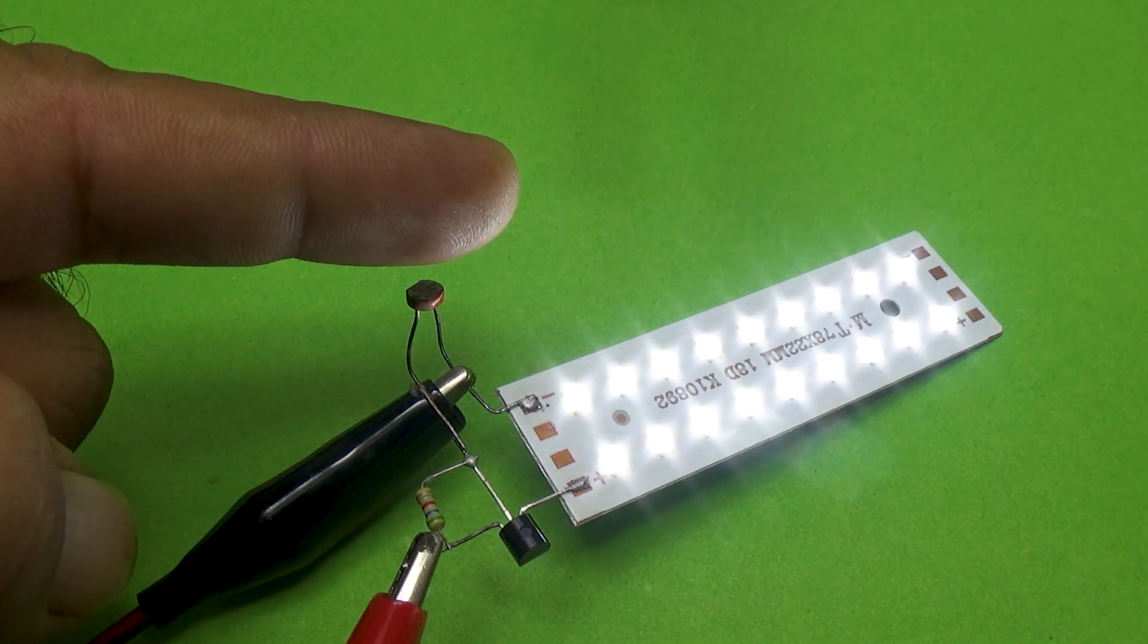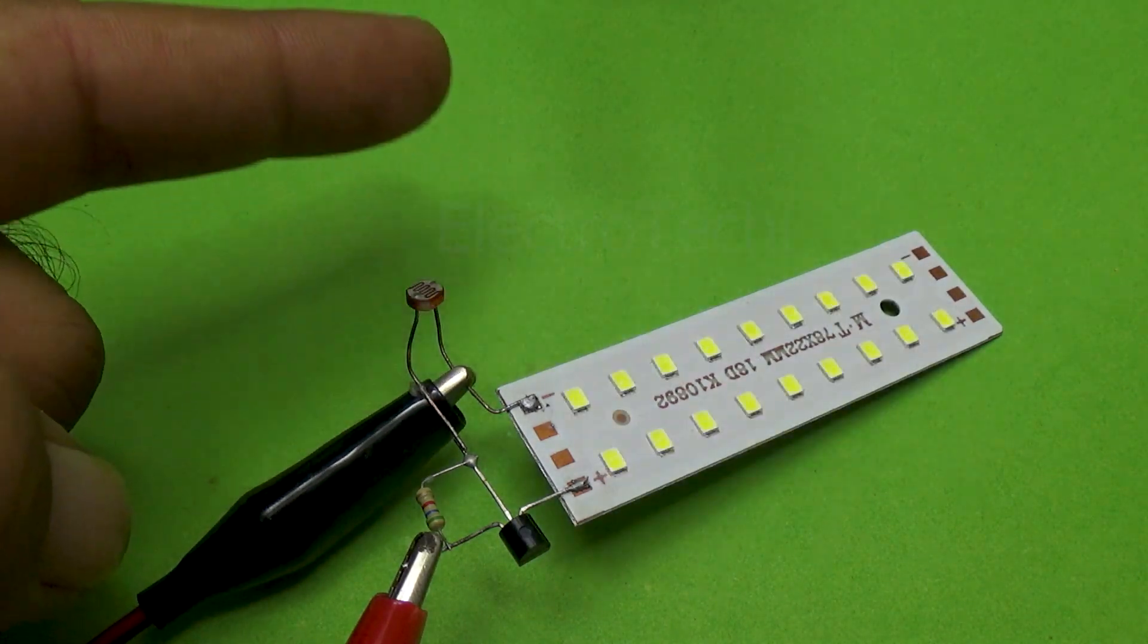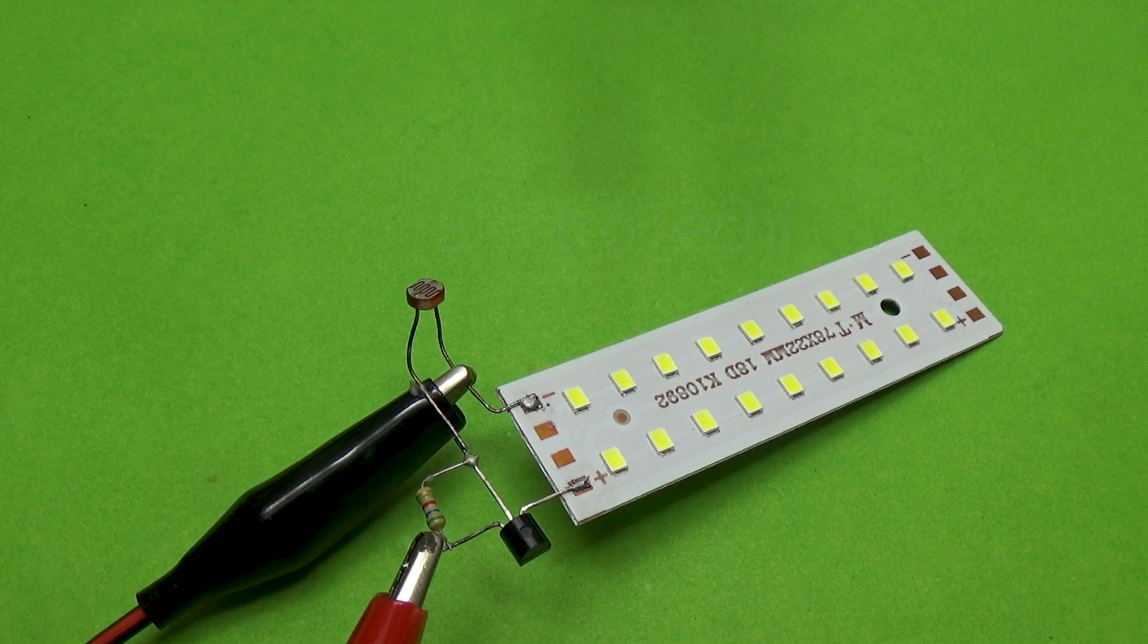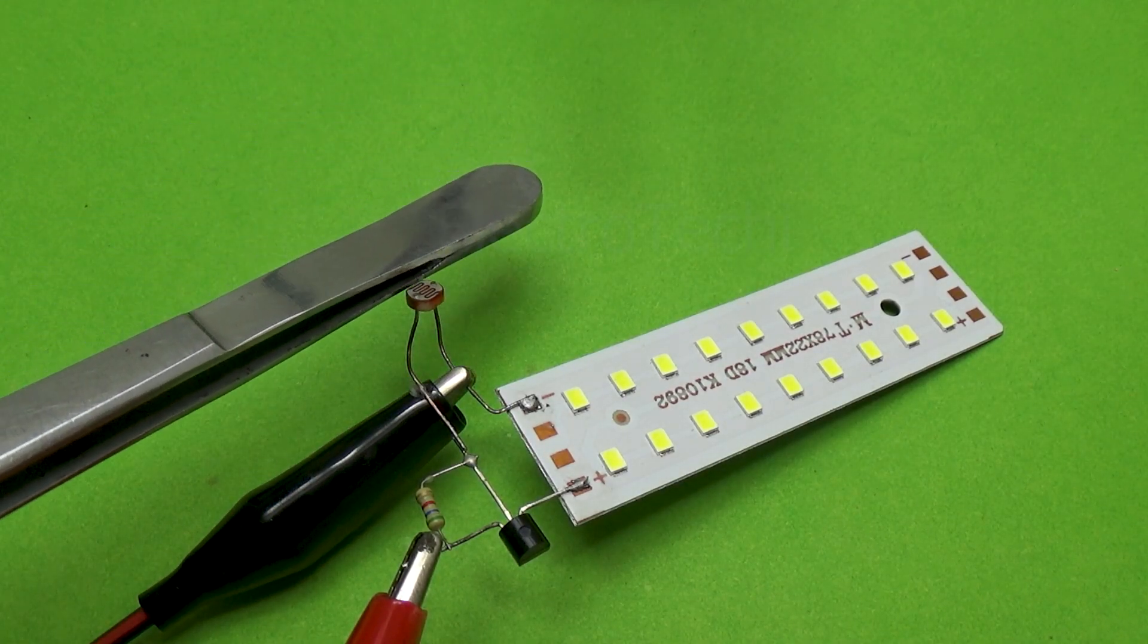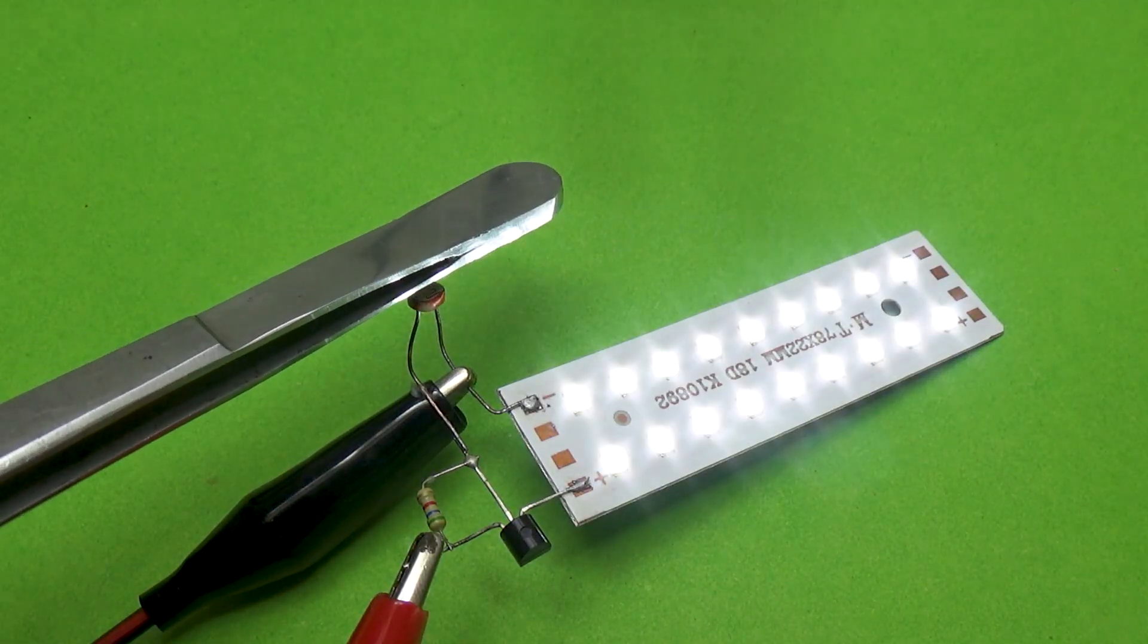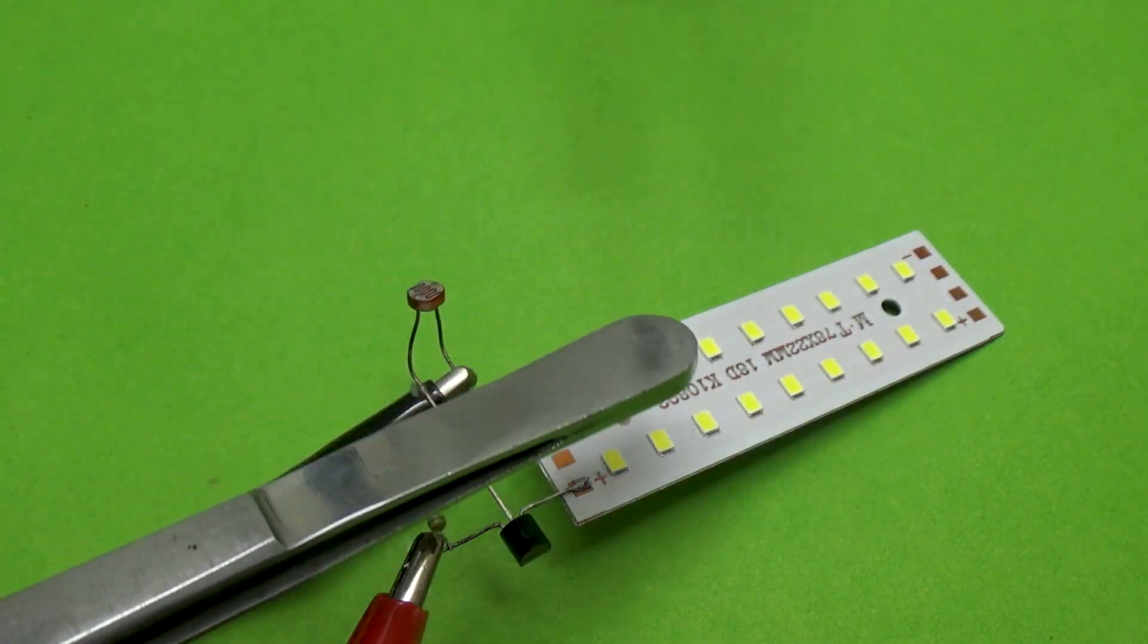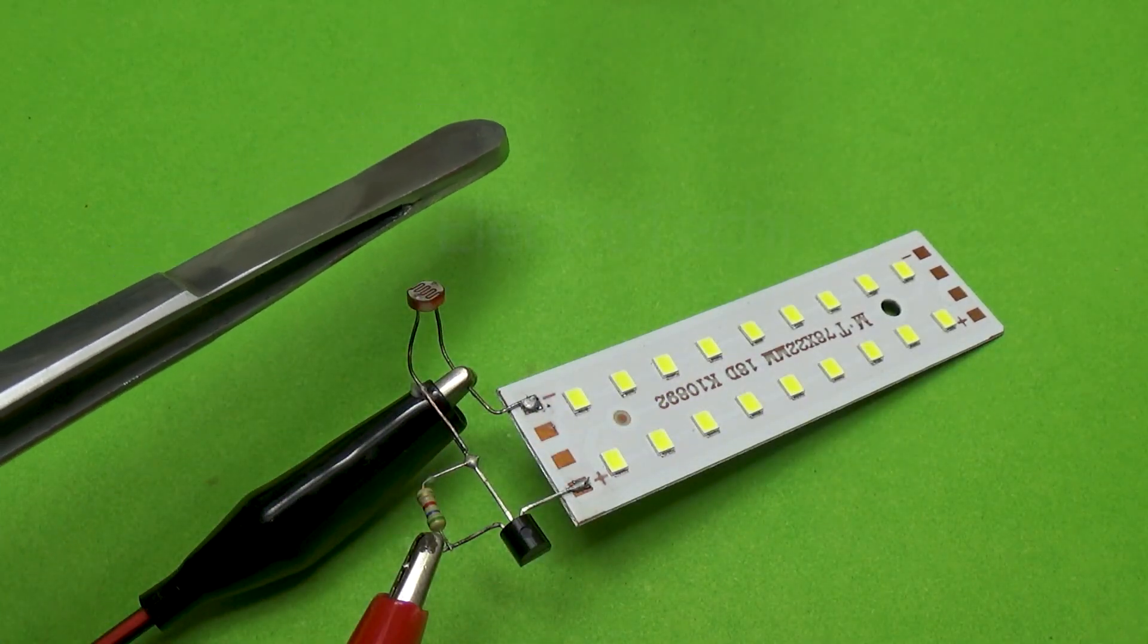Sensor-based control and transistor switching. The LDR acts as the sensor, converting light into resistance changes. The BC547 acts as the switch, responding to those changes and controlling the LED output. You can also use the same principle to control a relay, which can operate AC lights, fans, or other electrical loads. With a relay, this tiny low-voltage circuit can control high-power devices, making it perfect for real-world applications like automatic streetlights, nightlamps, and solar lighting systems.